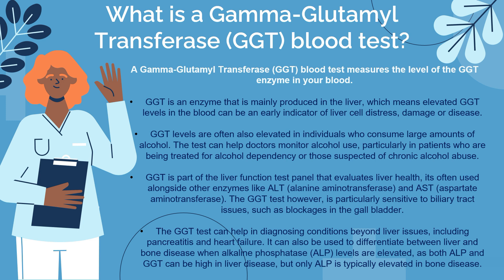The GGT test can also be used to differentiate between liver and bone disease when alkaline phosphatase levels are elevated, as both ALP and GGT can be high in liver disease, but only ALP levels are typically elevated in bone disease.